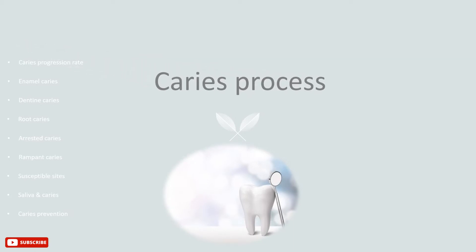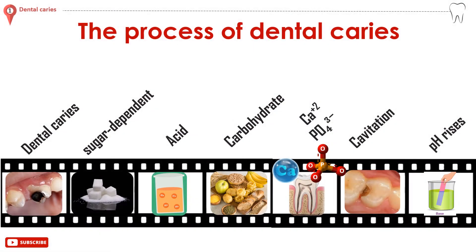Dental caries is an irreversible microbial sugar-dependent disease of the tooth hard tissue, as it is produced as a byproduct of the metabolism of fermentable carbohydrates by plaque bacteria, which result in a drop in the pH at the tooth surface. In response, calcium and phosphate ions diffuse out of the enamel, resulting in demineralization of the organic portion of the tooth, followed by its destruction.